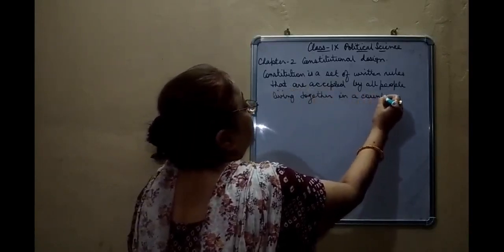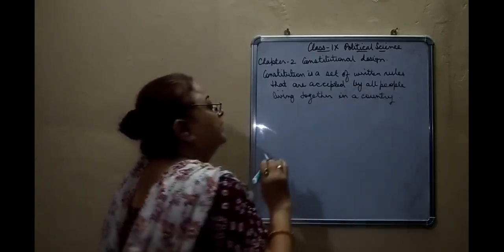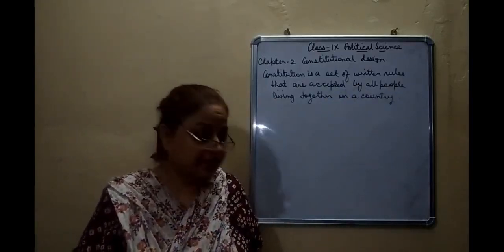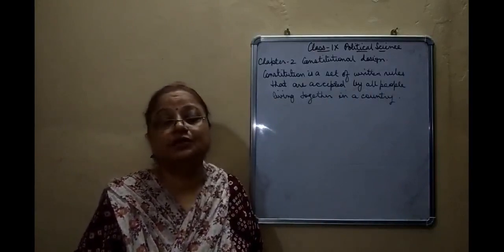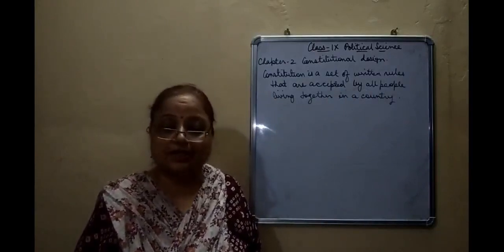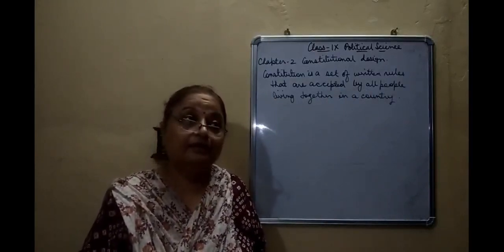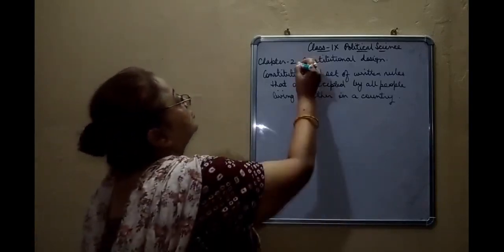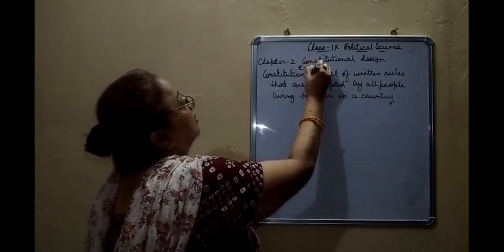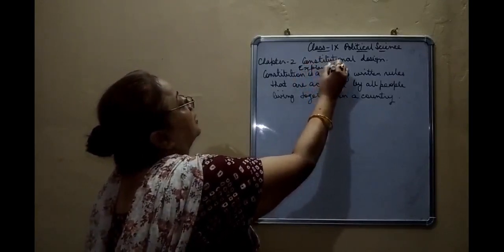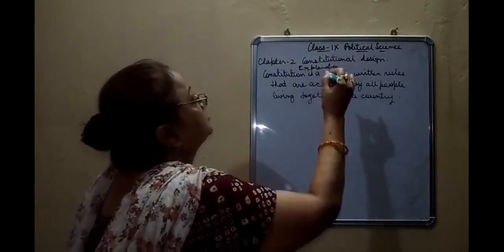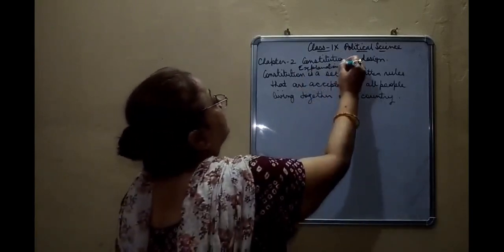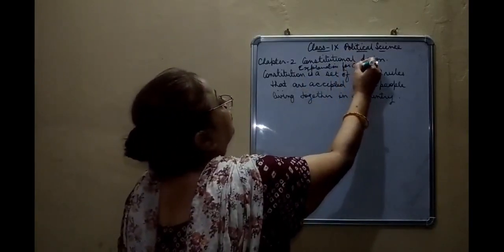All people living together in a country must accept these rules — otherwise, how will the administration of the country function? This is the explanation for constitution. You need to explain it in points, whether for a one-mark or a three-mark question.